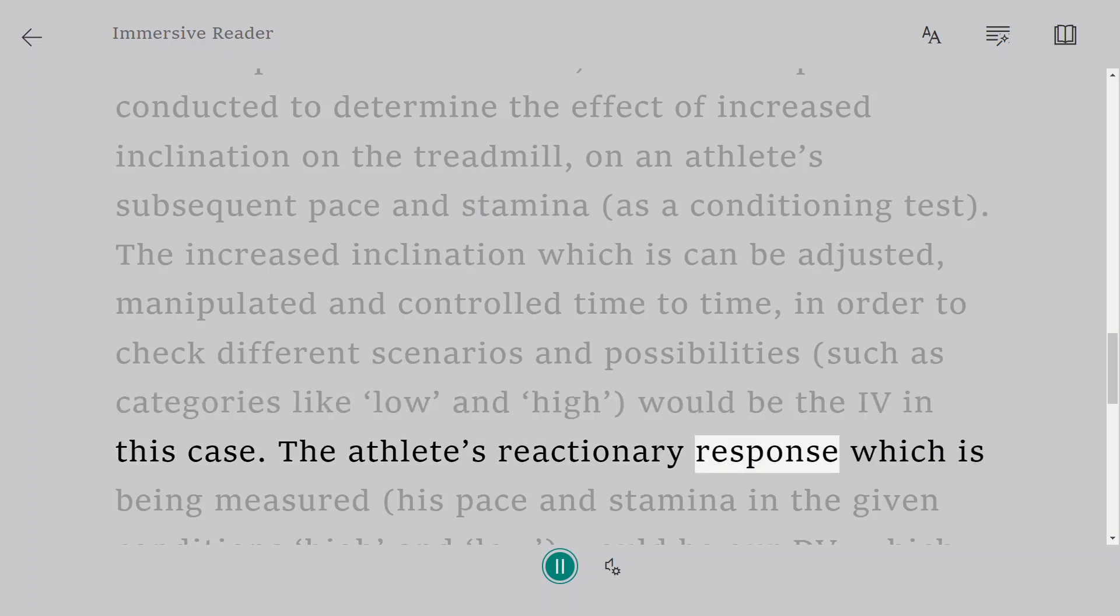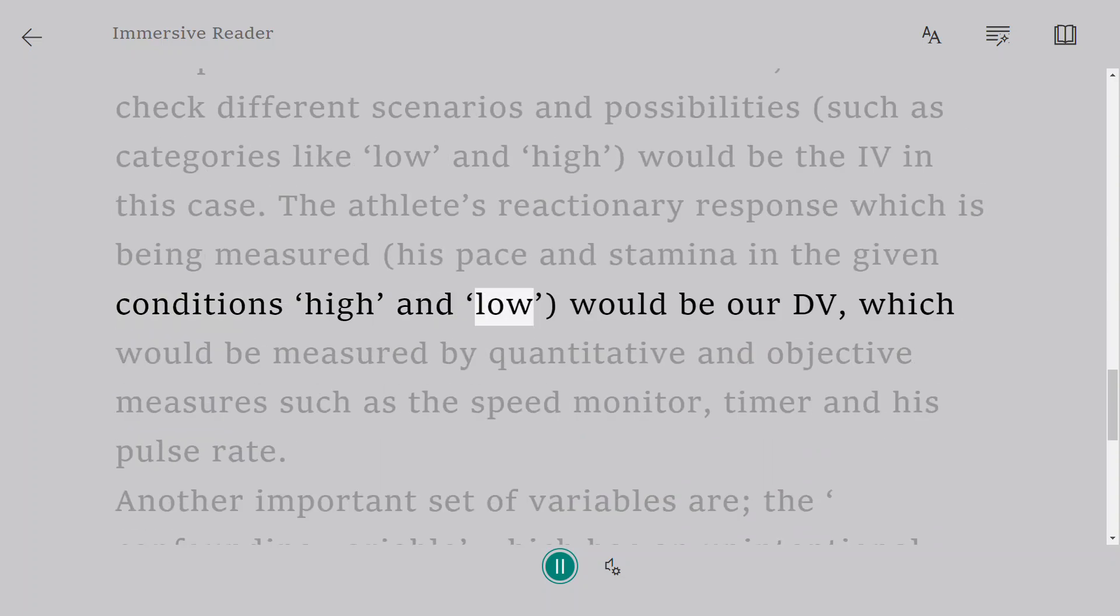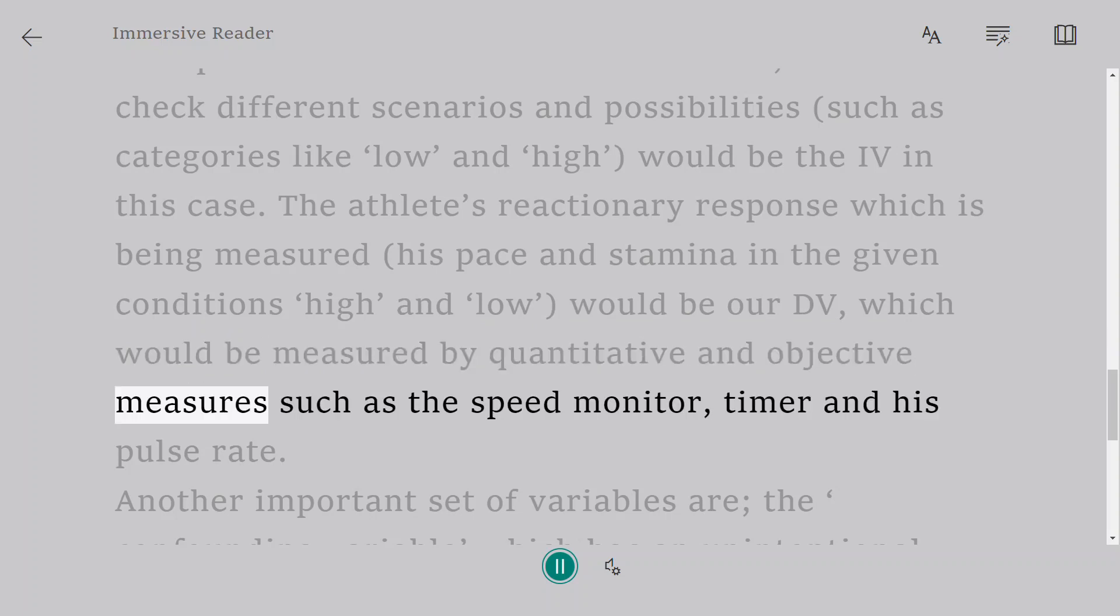The athlete's reactionary response which is being measured, his pace and stamina in the given conditions high and low, would be our DV, which would be measured by quantitative and objective measures such as the speed monitor, timer and his pulse rate.